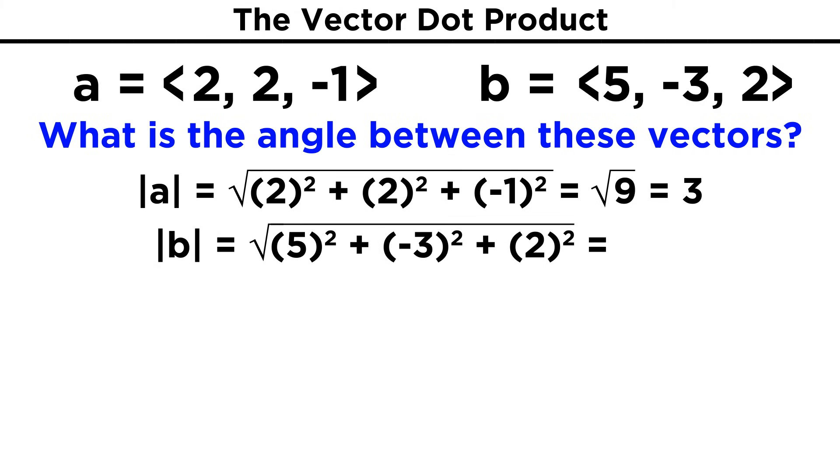For B, we get five squared, plus negative three squared, plus two squared, under the square root. We simplify to get thirty-eight, and we can just leave this as root thirty-eight. Now, let's perform the dot product.